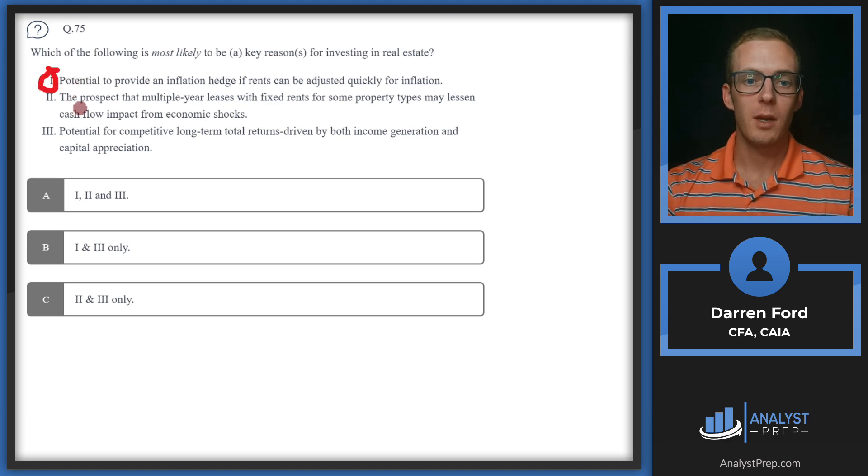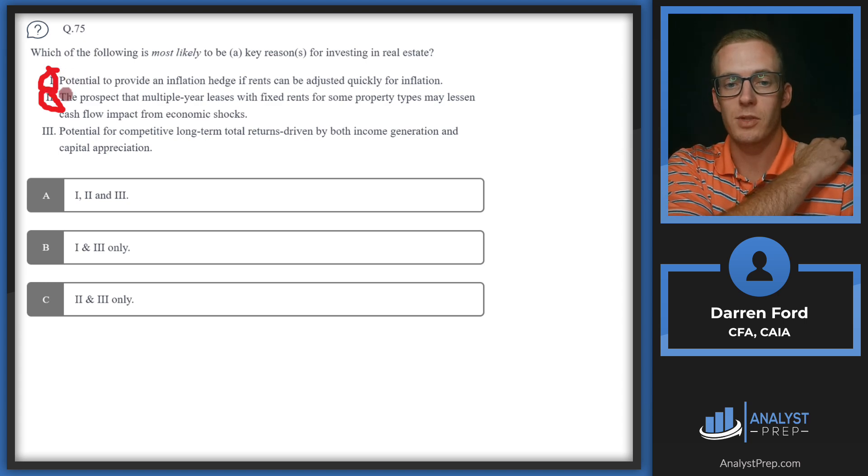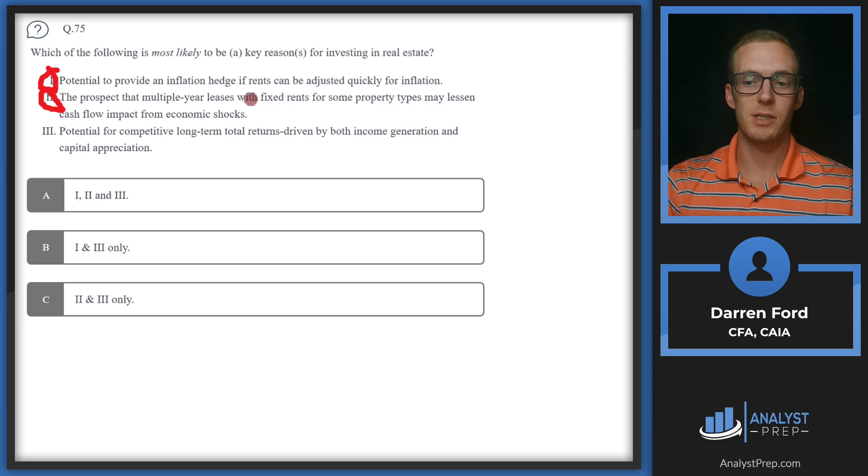Statement two: The prospect that multiple year leases with fixed rents for some property types may lessen cash flow impact from economic shocks. This is also going to be true and applies to a different type of real estate than statement one. This would apply more to commercial properties and renting to businesses that have good business models and cash flow to make it through different economic cycles. As long as your businesses stay afloat, they should be able to keep paying you rent.